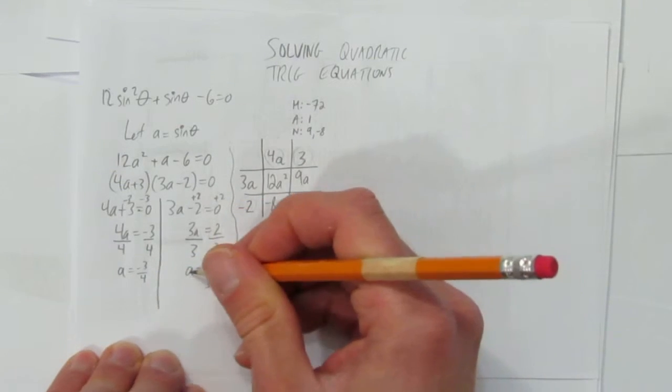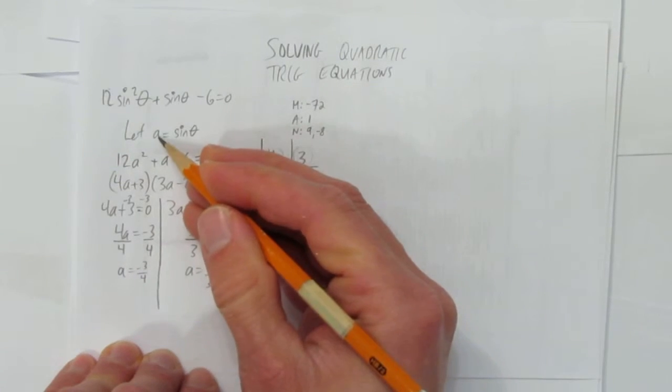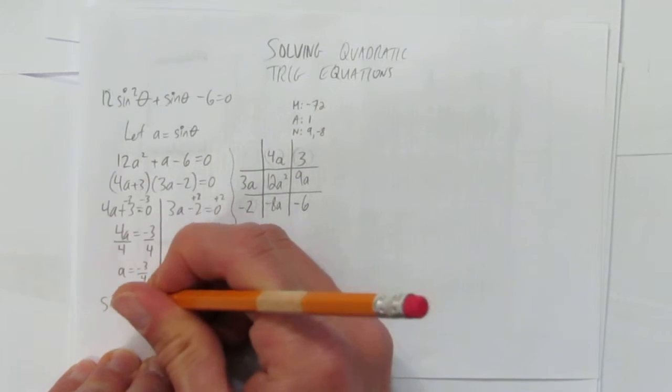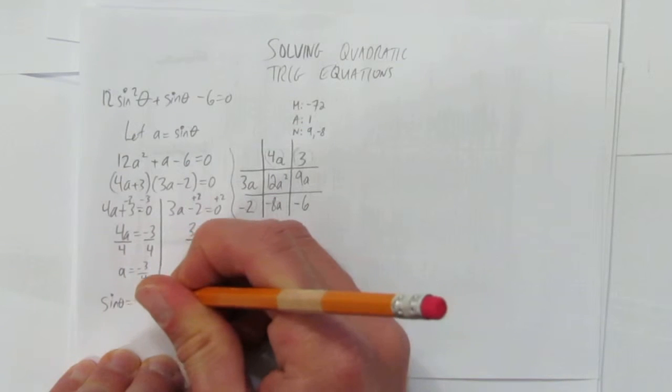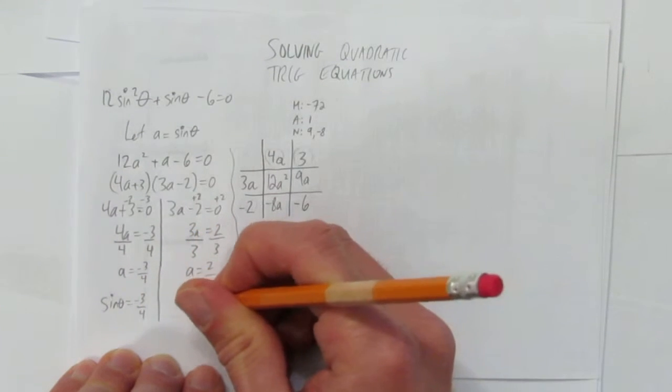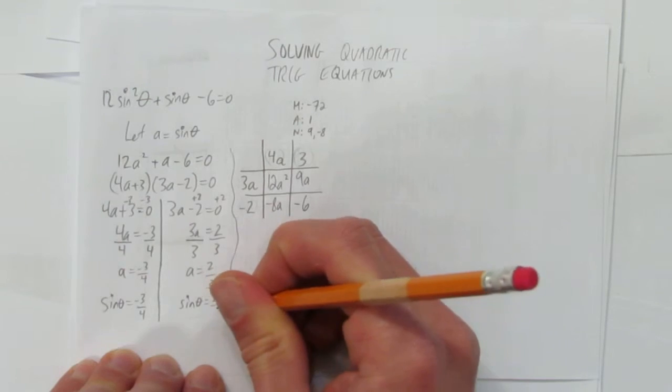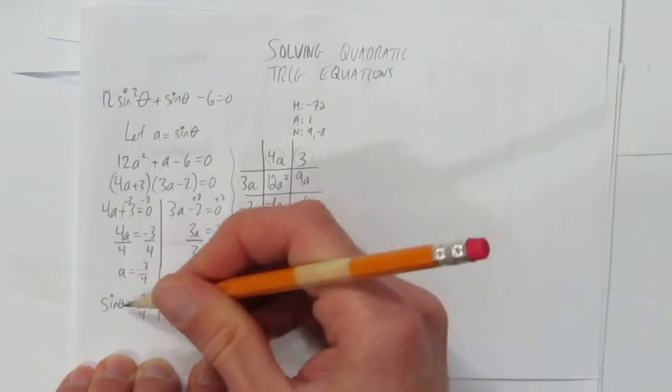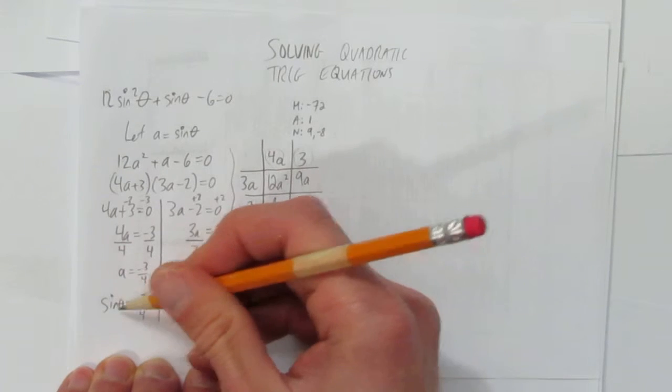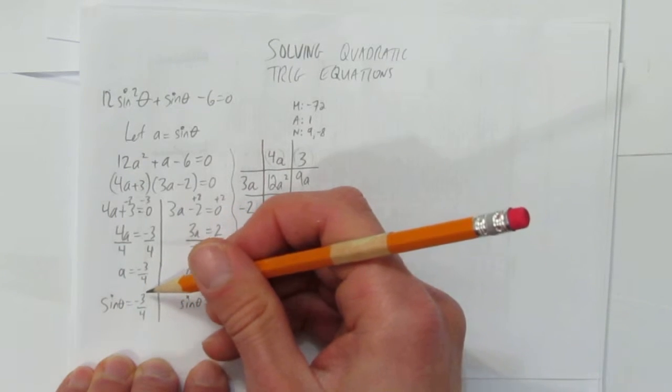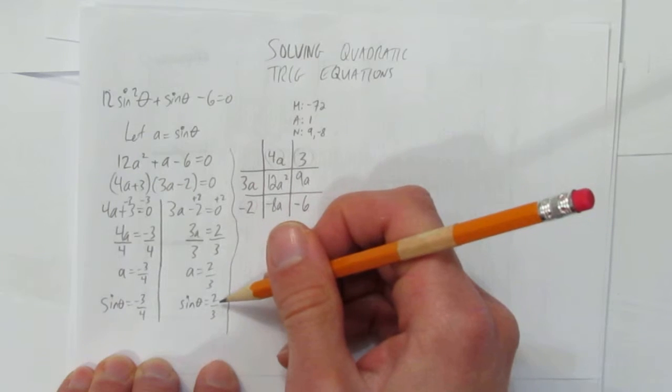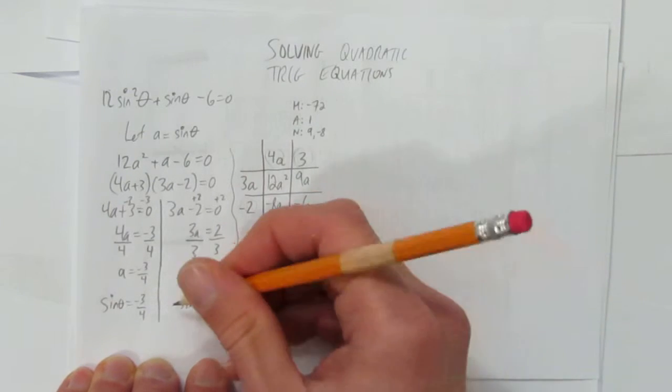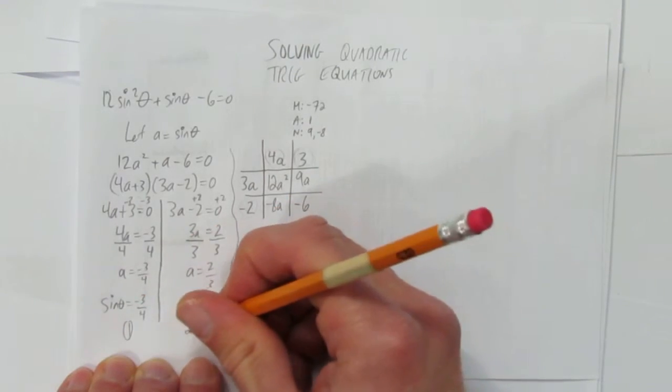But remember, it's not really a. It's a substitution. A was sine theta. So really, it's sine theta equaling negative 3 quarters and sine theta equals 2 thirds. We have two cases here. That's going to be two sets of solutions. One from sine theta can be negative 3 quarters. That's totally valid. Or sine theta can be positive 2 thirds. Either one's good. Let's call this case 1 and this case 2.